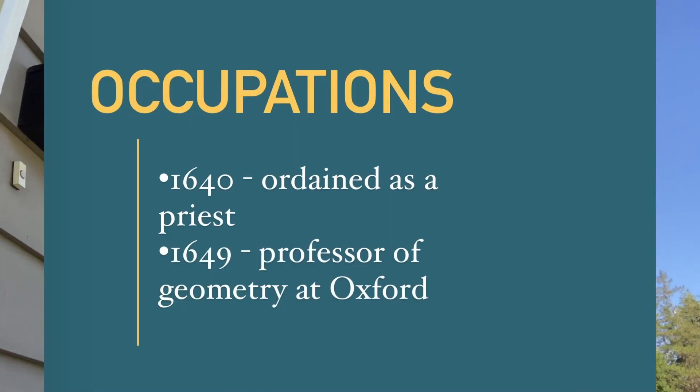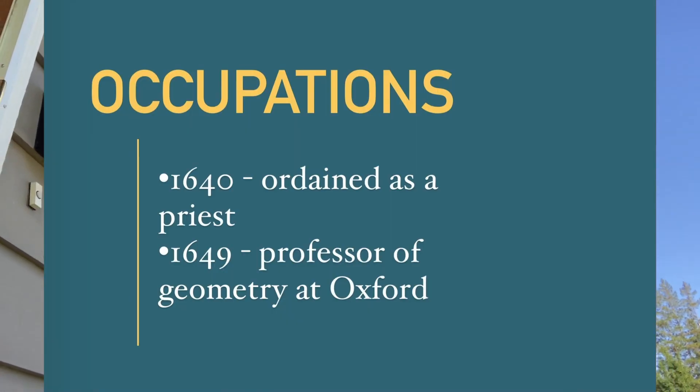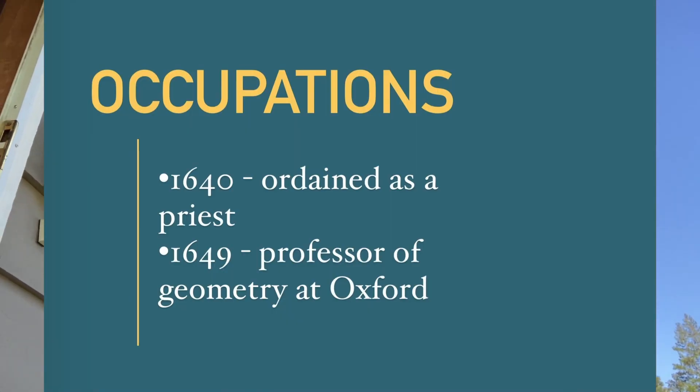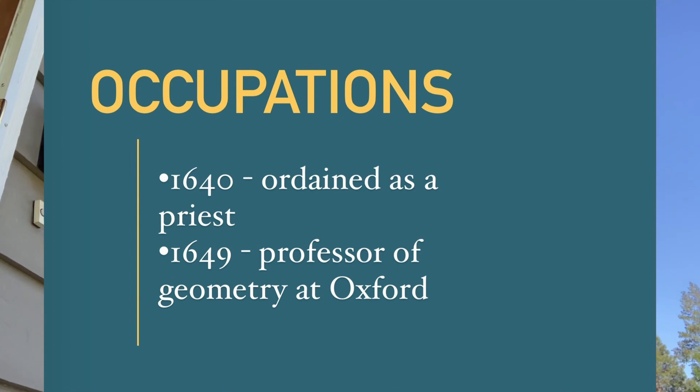John Wallace had quite a few occupations, but his first one was that he was ordained a priest in 1640, right after he got his degrees. Then at the beginning of his real mathematician activity was 1649, where he was appointed to be a professor of geometry at the University of Oxford.